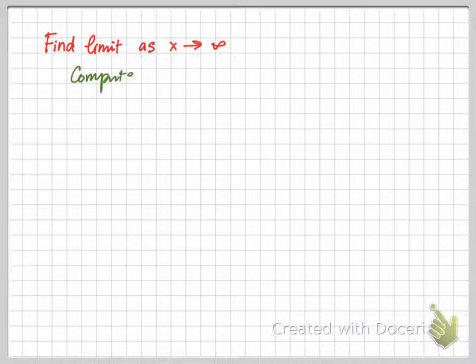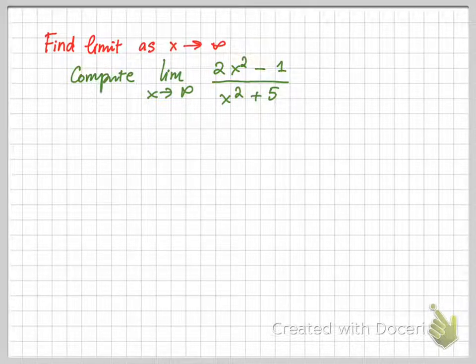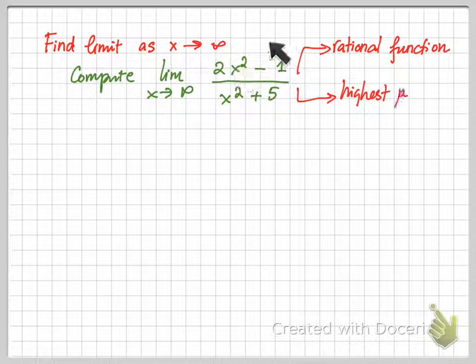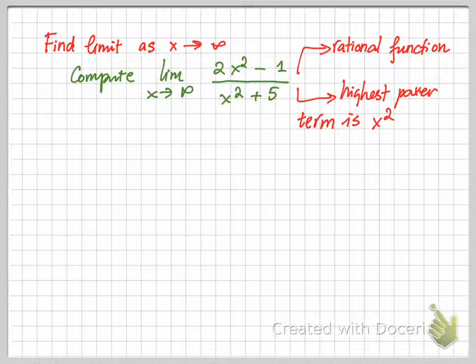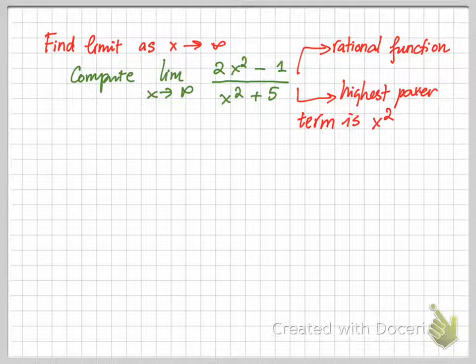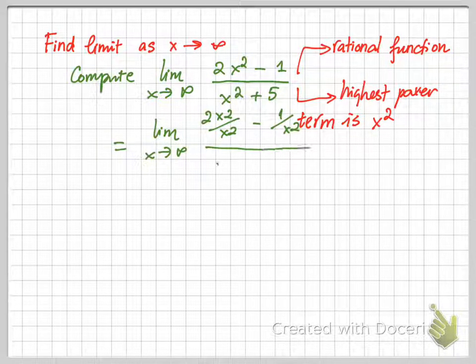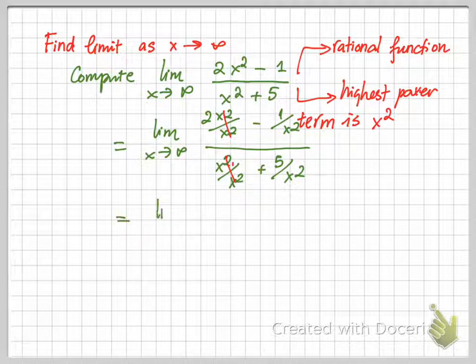Now let's look at the first example, which asks you to find the limit of a rational function when x goes to infinity. It's a rational function because you have a polynomial in the numerator and another polynomial in the denominator. The highest term of these functions is x squared. In order to find this limit, you divide the rational function by its highest term — divide each element by x squared and simplify.